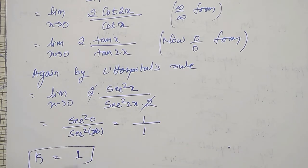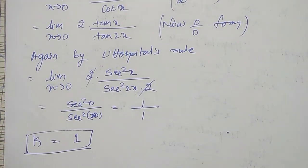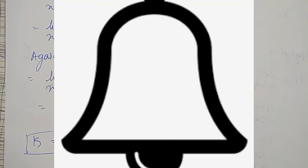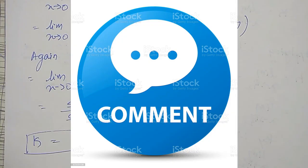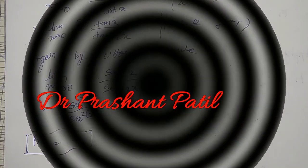The limit tends to k equal to 1. Like this, some more examples on indeterminate forms — 0 by 0 or infinity by infinity — I am going to solve in my next videos. Please subscribe my channel, don't forget to hit the bell icon so that you will get notifications of my next videos. Like this video, comment and also share this video. Thank you friends.